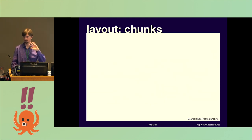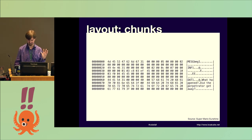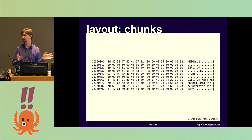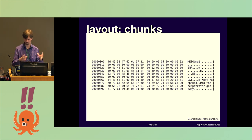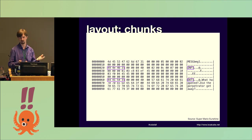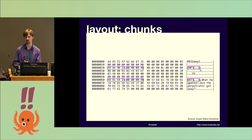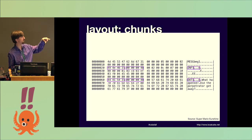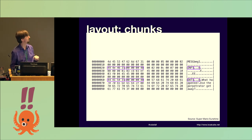Another way you can have things laid out in a file is with chunks. This is more common for really complex formats like documents or movie files that need a whole bunch of different types of things all in one file. Usually you'll have a four- or eight-byte identifier for what type each chunk is, and then another few bytes saying how long that chunk is. So you can see each of these two chunks is four zero bytes, and that exactly lines up with four rows in our hex dump.